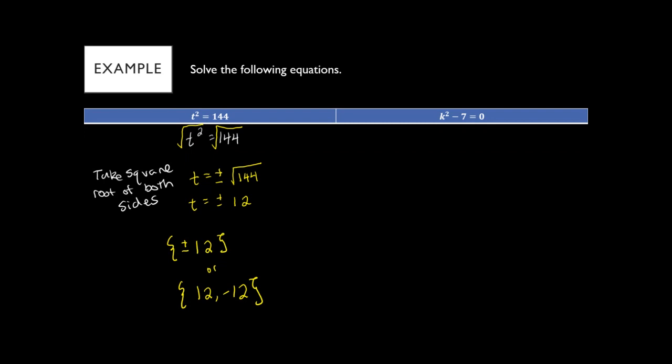You can write your solution set with curly braces as ±12 or as {12, −12} because we have two answers. You always write both answers — you're never going to have just one number here unless you're taking the square root of zero, which is a very rare situation.